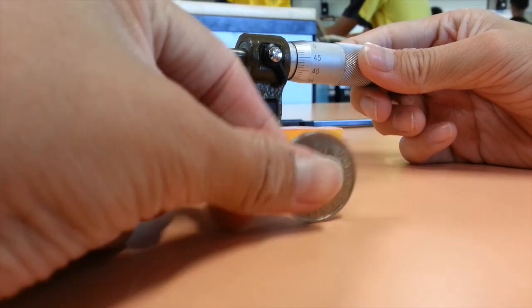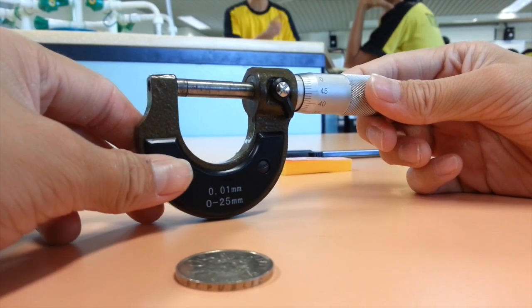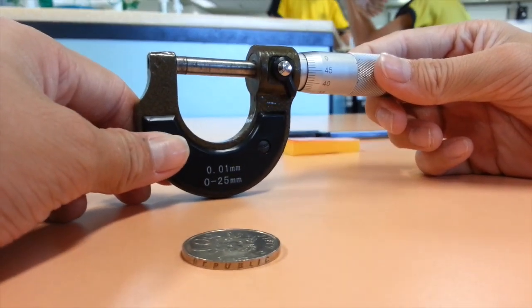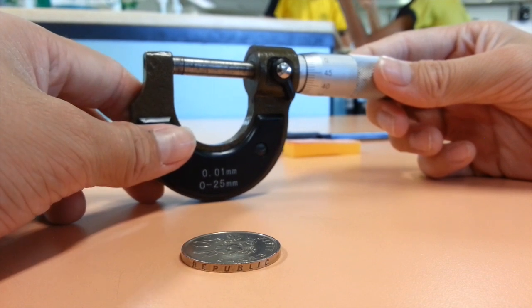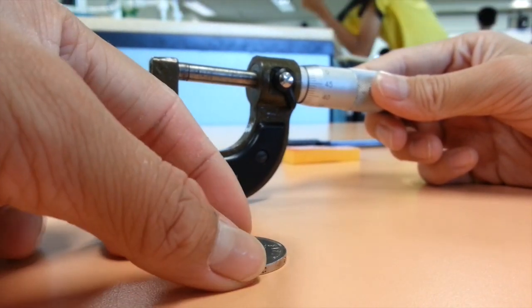The first instrument will be the micrometer screw gauge. We will be using it to find the volume and density of a 50 cent coin. The micrometer has a precision of 0.01 mm. In order to find the volume, we will find the diameter and thickness of the coin.